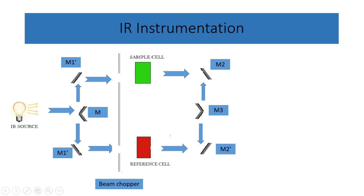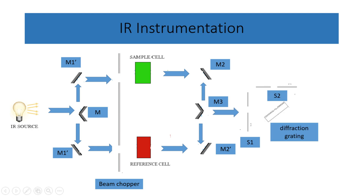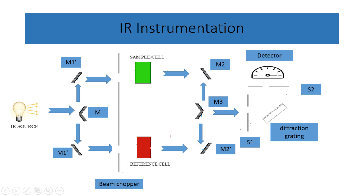The light then passes through slits S1 and S2. The slit S2 only allows infrared radiation with wavelengths between 4,000 and 400 centimeters inverse to pass through. This selected range of radiation, known as reference radiation, reaches the detector, which measures its intensity.